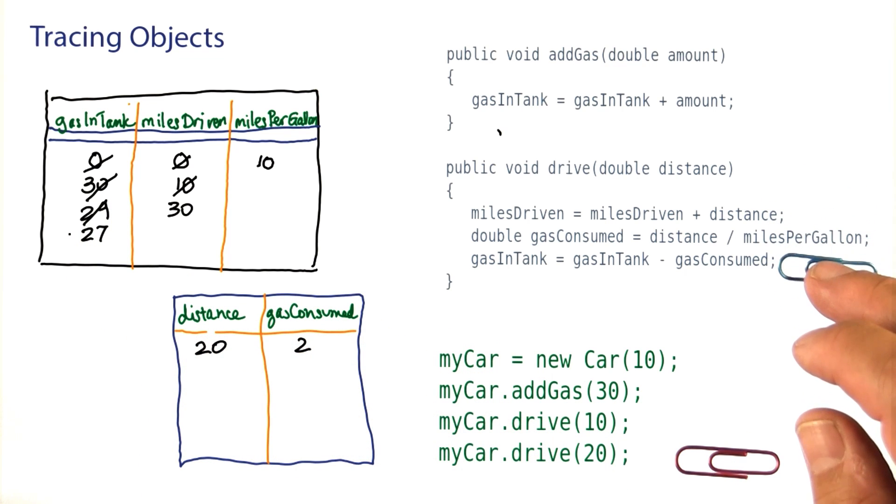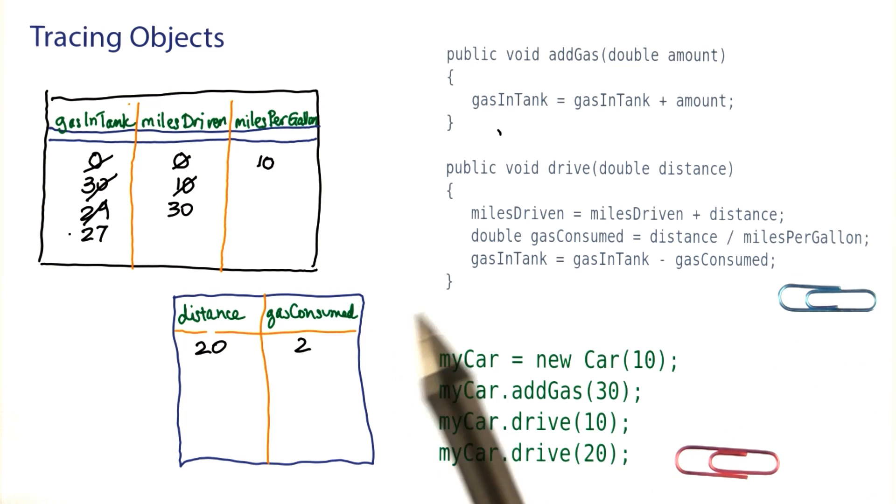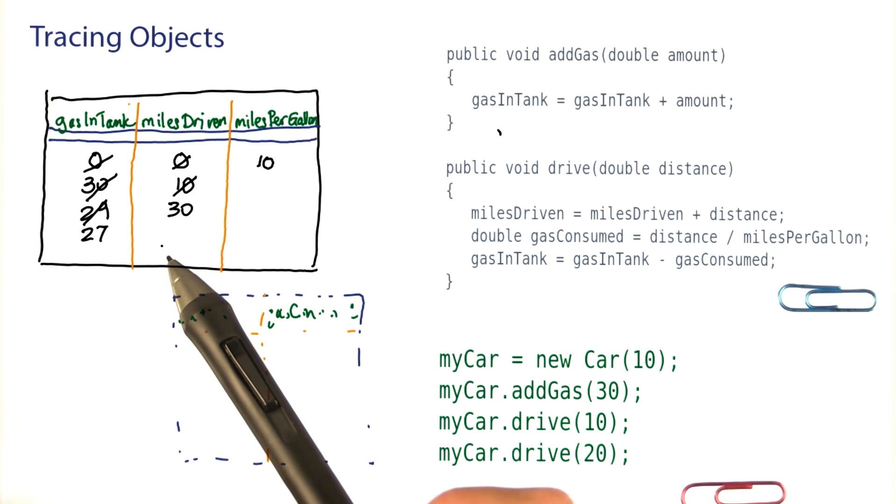So now we've executed the three steps in this method. This method is now finished. And once again the local variables go away. And we're done. And this is the remaining state of the object.